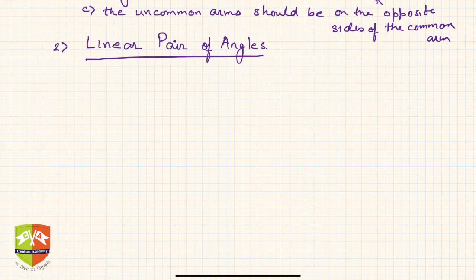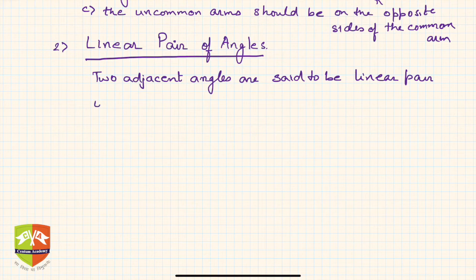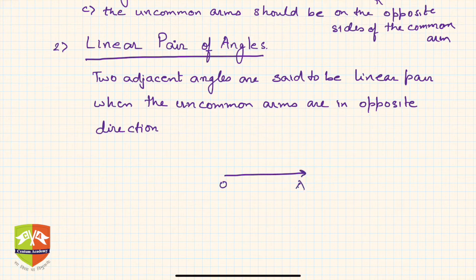Now, what is a linear pair of angles? A linear pair is nothing but two adjacent angles where the uncommon arms are in opposite directions. For example, OA and OB are in exactly opposite directions, and OC is the common arm.